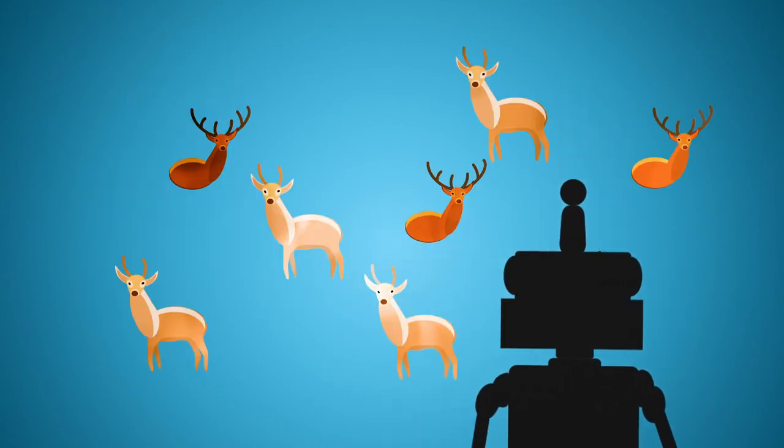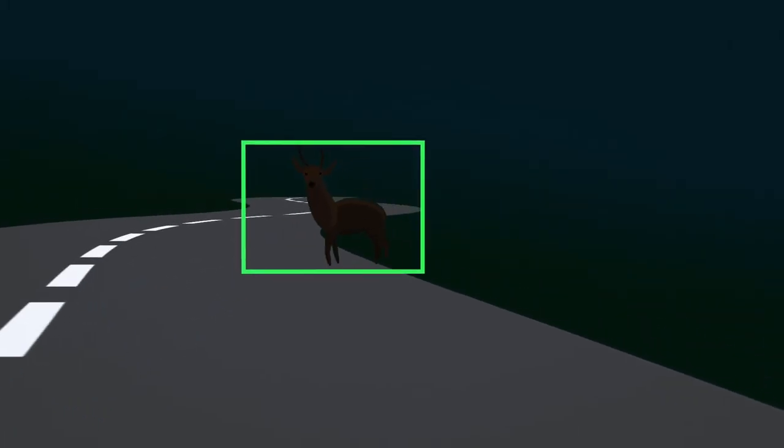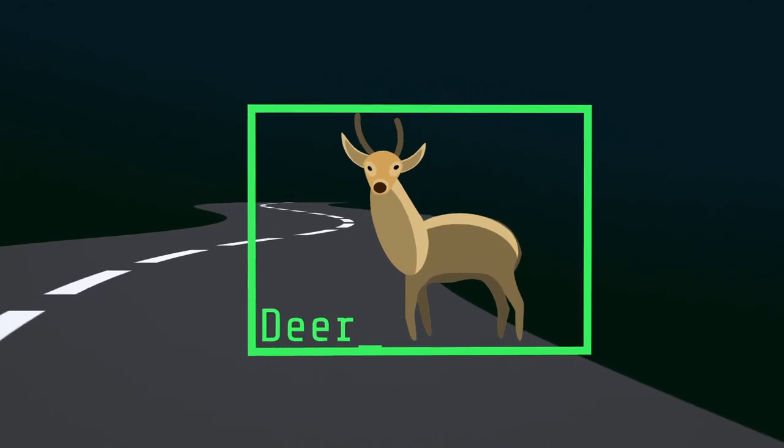To give an algorithm the understanding of what a deer is, programmers gave it tons of deer pictures to analyze them and find common characteristics. Like this, programs are capable of interpreting their visual environment.